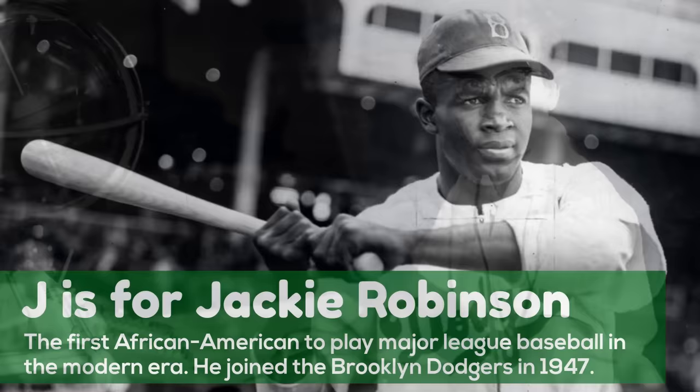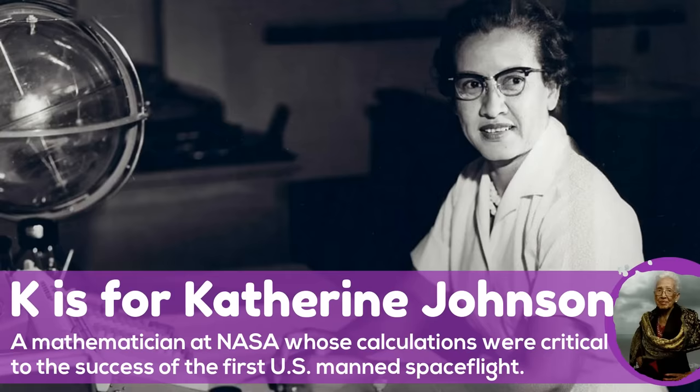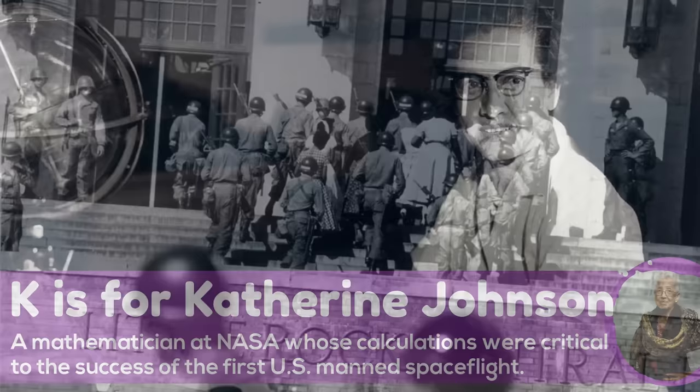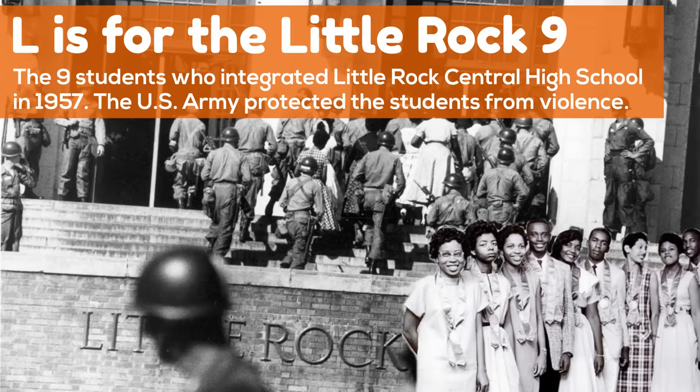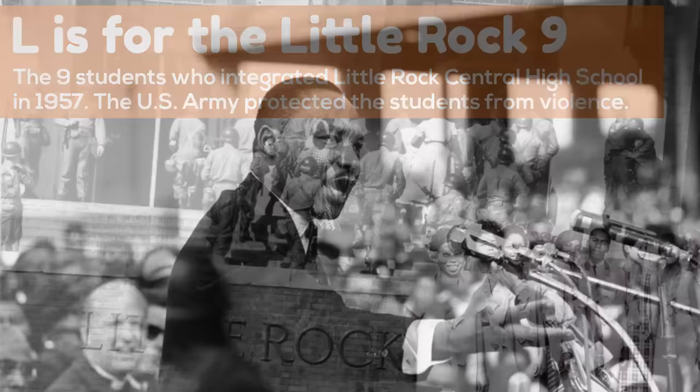K is for Katherine Johnson, a mathematician at NASA whose calculations were critical to the success of the first U.S. manned spaceflight. L is for the Little Rock Nine, the nine students who integrated Little Rock Central High School in 1957. The U.S. Army protected the students from violence.